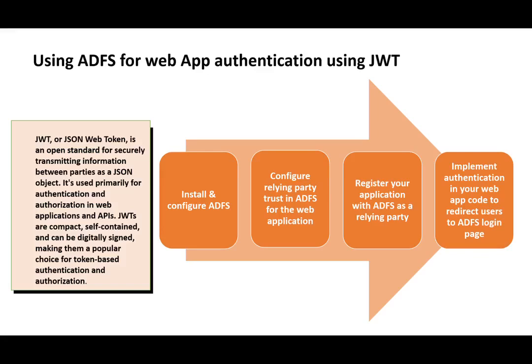The second step is to configure the relying party trust. In ADFS, you need to create a relying party trust for your web application. This is where you define the details of your application, including the token type — which in our case will be JWT — along with allowed client URLs and a few other similar properties.